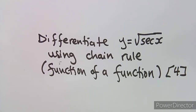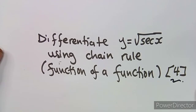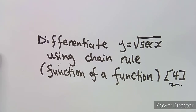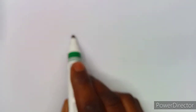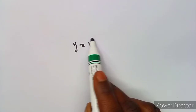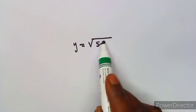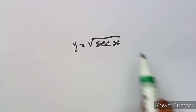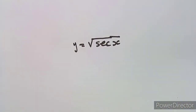We are given to differentiate y is equal to the square root of sec x using the chain rule. We know that chain rule is function of function, and we have got four marks for that. So we want to see whether the number of marks we are given and what we are supposed to apply is going to correspond.